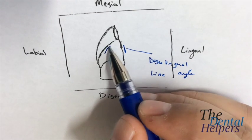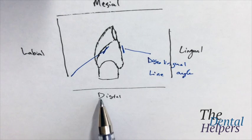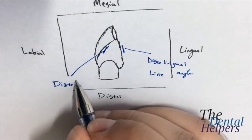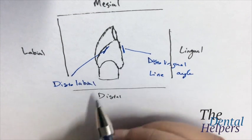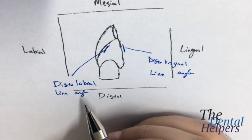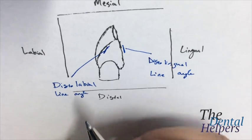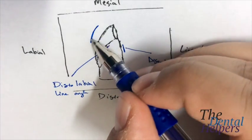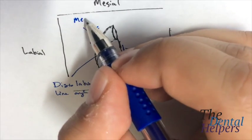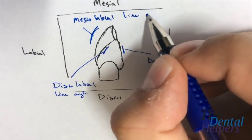This area right here, as you probably guessed it, is the distal again. And now we're labial. So it's the distal labial line angle. And then the same thing right here now. We're on the mesial side. So this would be the mesial labial line angle.